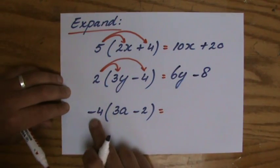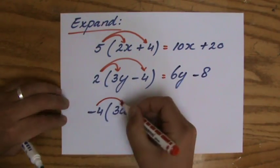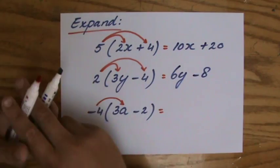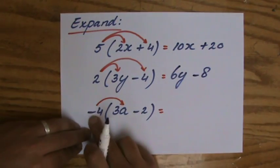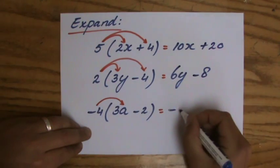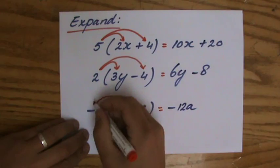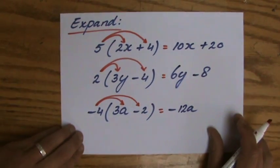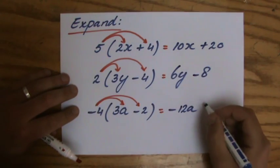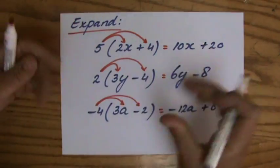Last one. Minus 4 times 3a. So careful with those negatives. Just make sure you don't make any silly mistakes. Take care in all your work. In everything you do in life anyway. Minus 4 times 3a is minus 12a. And minus 4 times minus 2. Don't forget to multiply that second term as well. Minus 4 times minus 2. That is going to be a positive 8. Fantastic. We have expanded.